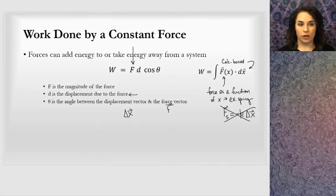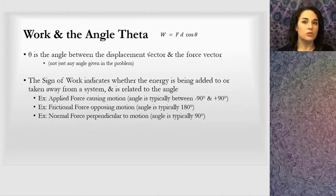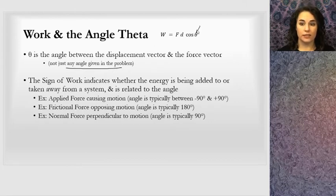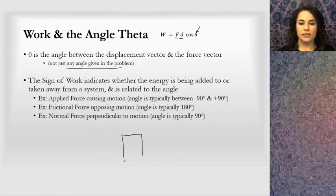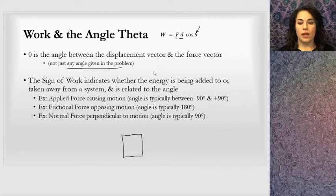The angle between those two vectors is very important. If they're in the same direction, if they're opposing, if they're at any other angle — that will be something we'll key in on. I created a whole slide just to talk about this because it is one of the more important ideas when we look at work done by a force, and which forces we really pay attention to versus which ones we disregard because the work done is irrelevant. Just to highlight: it's the angle between the displacement vector and the force vector — not just any angle given in the problem. The sign of work comes from this angle, and it represents whether energy is being added to or taken away from the system. Positive work means energy added; negative work means energy taken away.